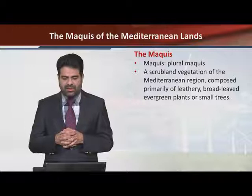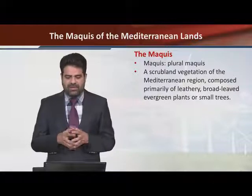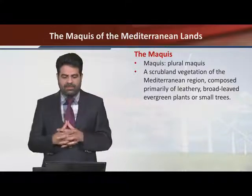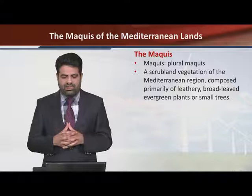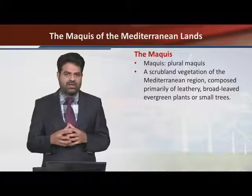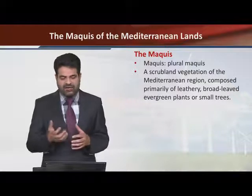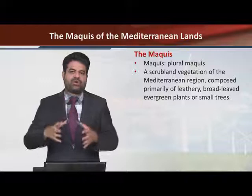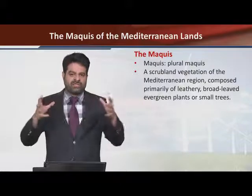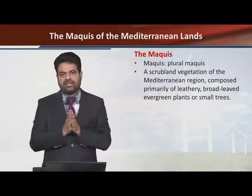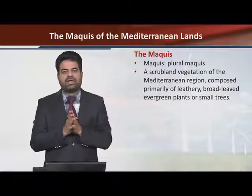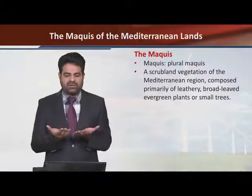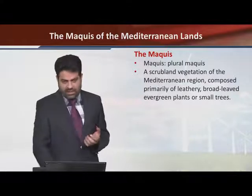The scrubland vegetation is composed primarily of leathery broadleaf evergreen plants. The plants are rather small trees — these are small trees, Mediterranean trees — but they have more small leaves.